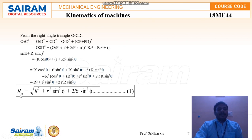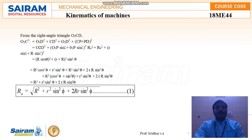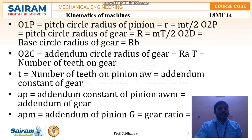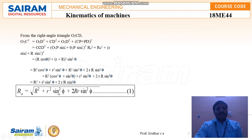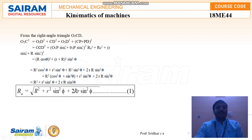The main equation to find the minimum number of teeth to avoid interference is: Ra = √(r² + R²·sin²φ + 2R·r·sin²φ), where capital R is the radius of the gear (mT/2), small r is the radius of the pinion, and φ is the pressure angle. Using this equation with the radius of the pinion, radius of the gear, and the pressure angle, we can find the minimum number of teeth required to avoid interference.